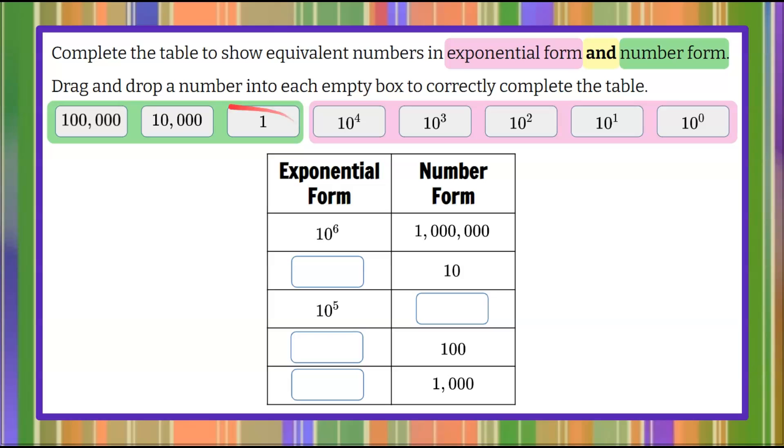Number form is the standard way to write a number: 100,000, 10,000, one. Exponential form is with an exponent. So these all are base 10: 10 to the 4th, 10 to the 3rd, 10 squared, 10 to the 1st, and 10 to the 0.